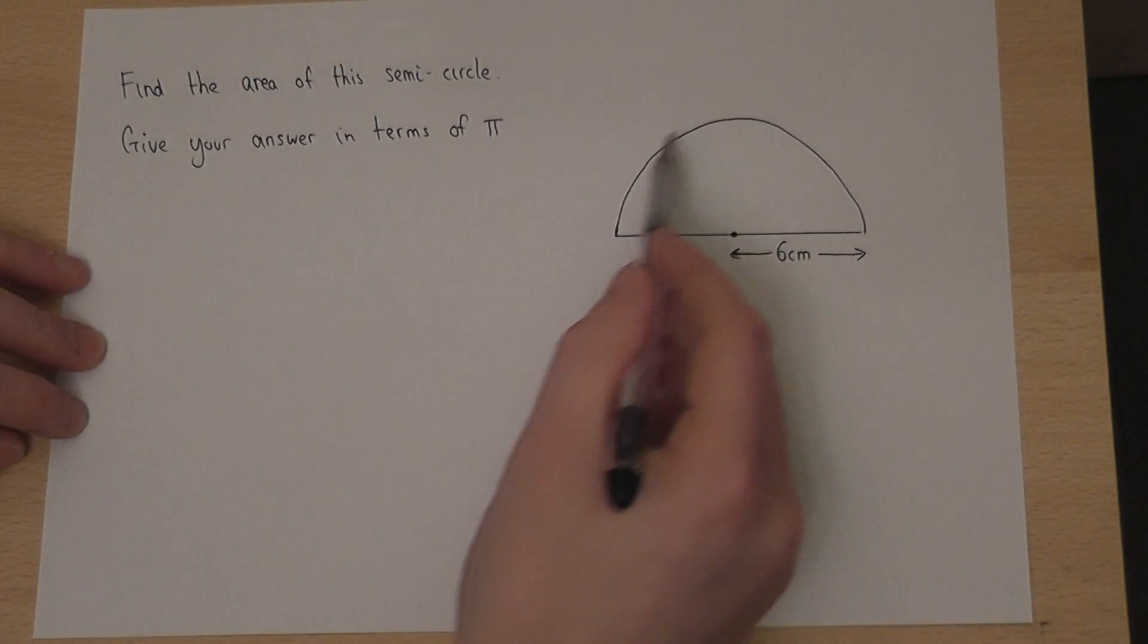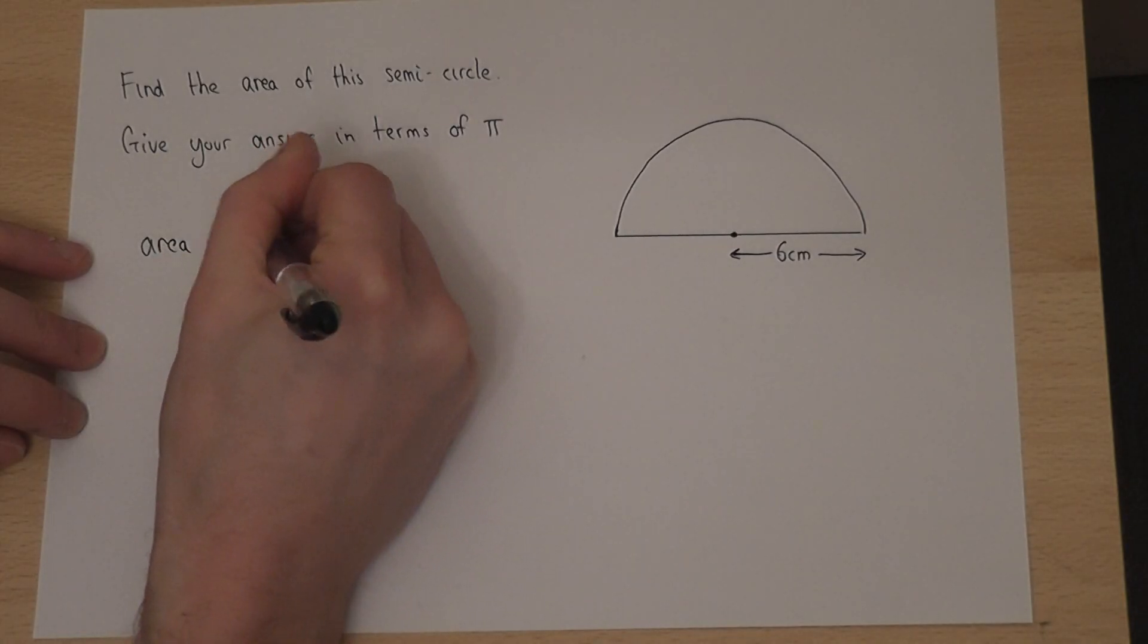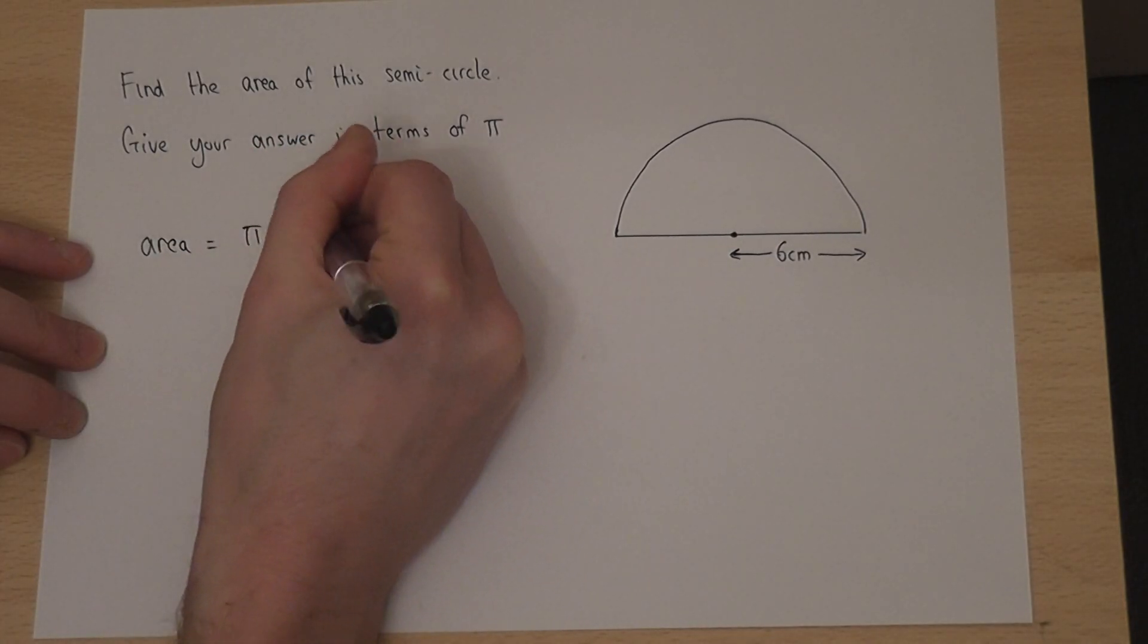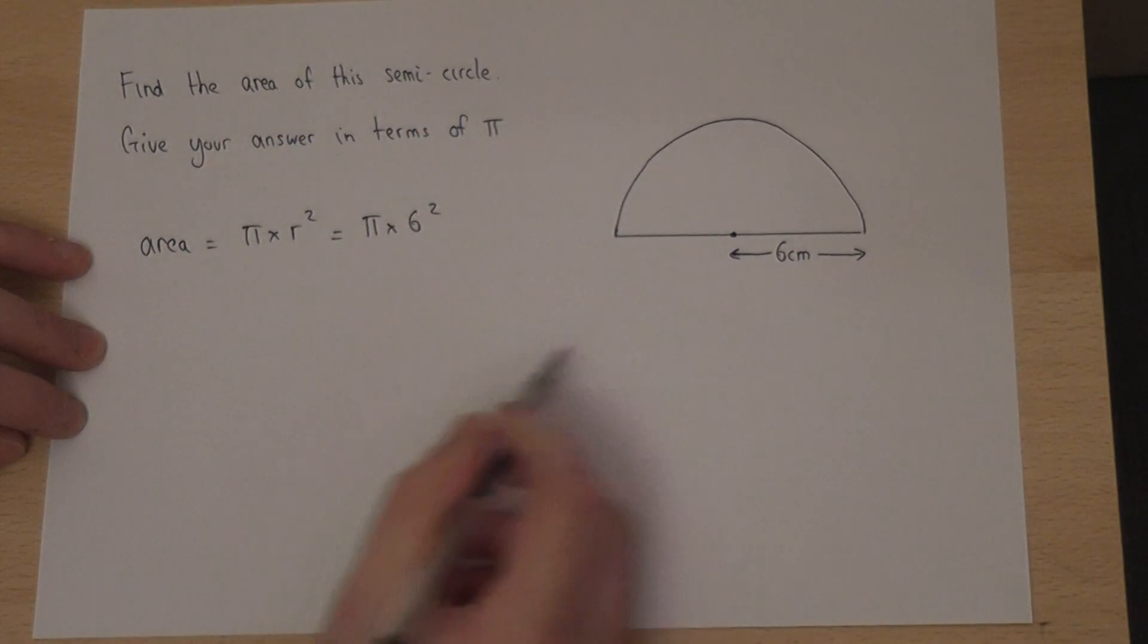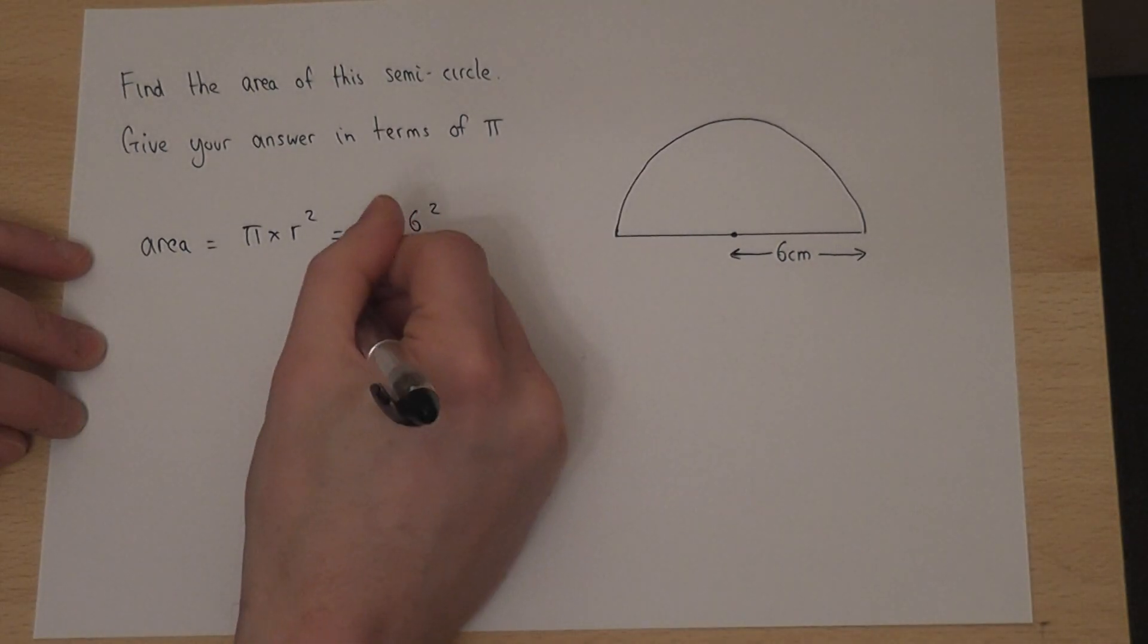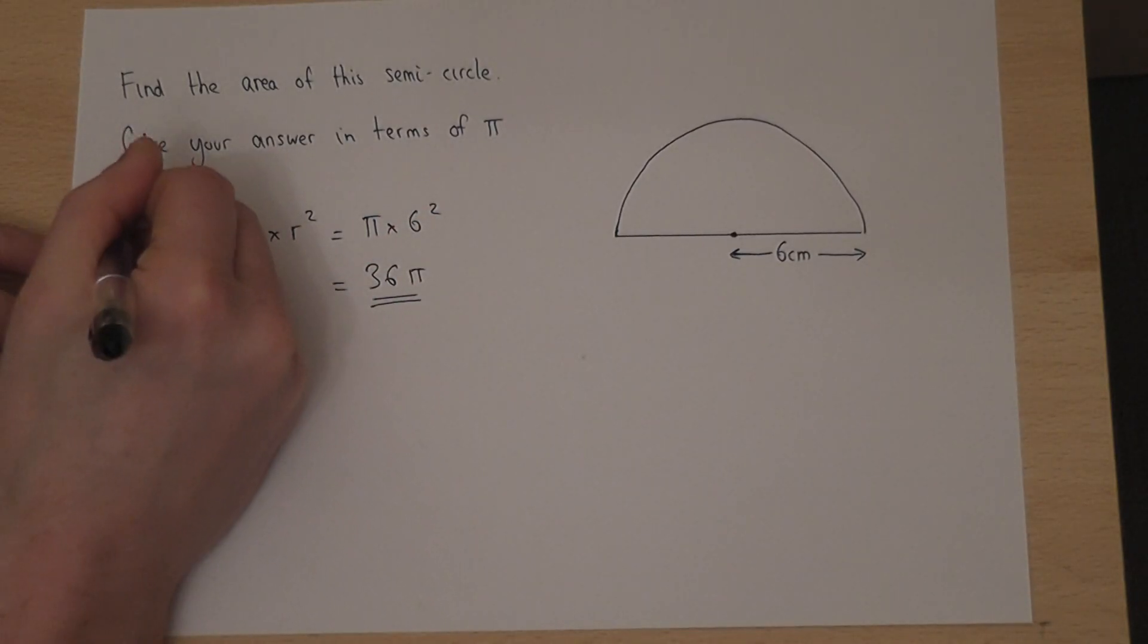Now, if this was a full circle, then the area would equal pi times r squared, which is pi times 6 squared, because 6 is the radius, which equals 36 times pi. That's of the full circle.